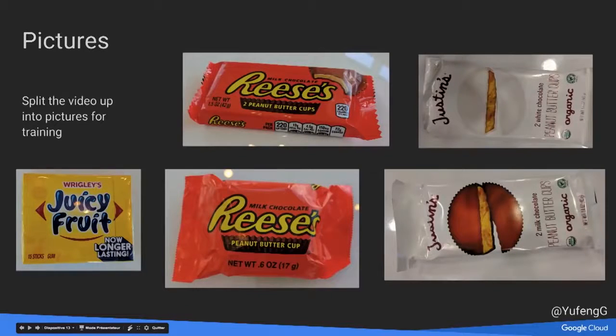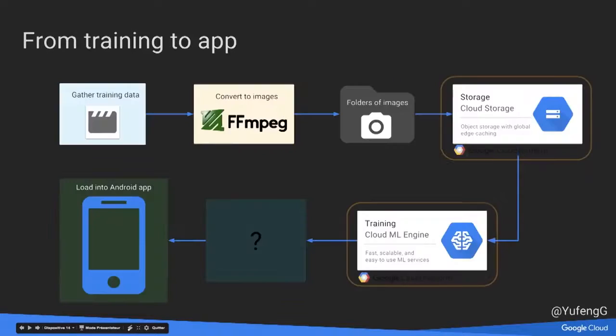So we have folders of images. What's next? We take these pictures and send them to training. In my particular case, I uploaded them to the cloud because my MacBook was running out of space from all the images. I zipped them up, put them in the cloud, and I did my training in the cloud. You can do it on your data center or on your local machine. The training I did uses transfer learning.